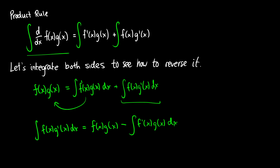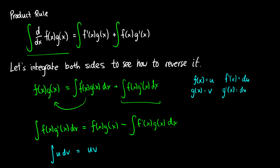This is a mouthful, so we make substitutions: f(x) = u and g(x) = v, which gives us f′(x) = du and g′(x) = dv. Substituting in makes it much nicer to work with. This gives us the integration by parts formula: the integral of u dv equals uv minus the integral of v du.